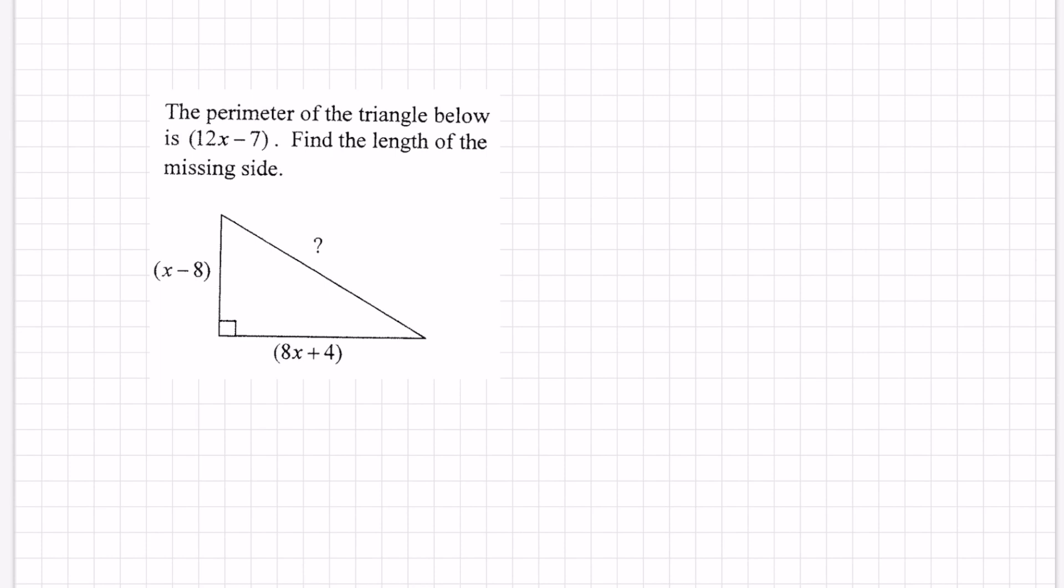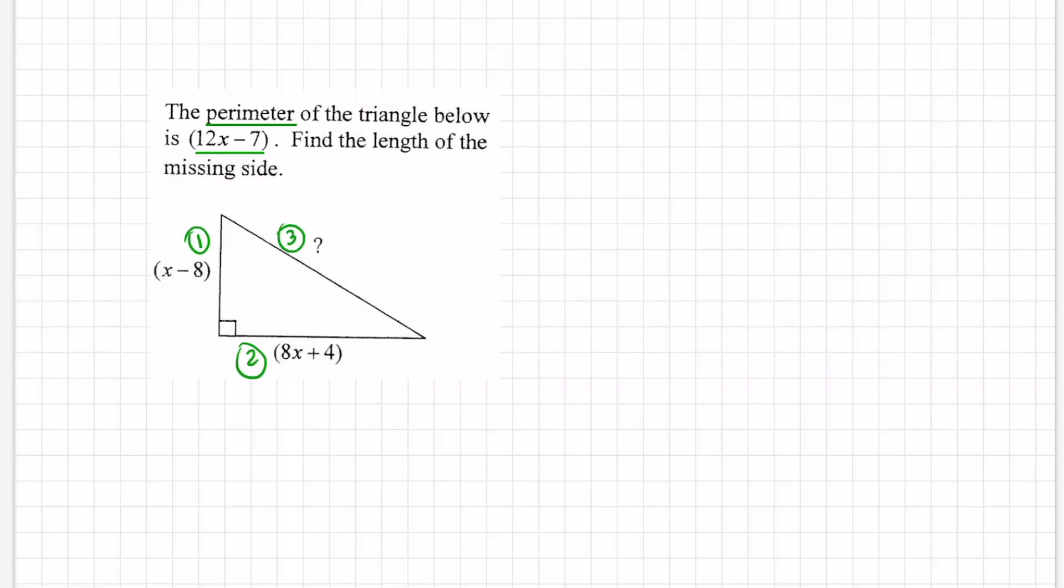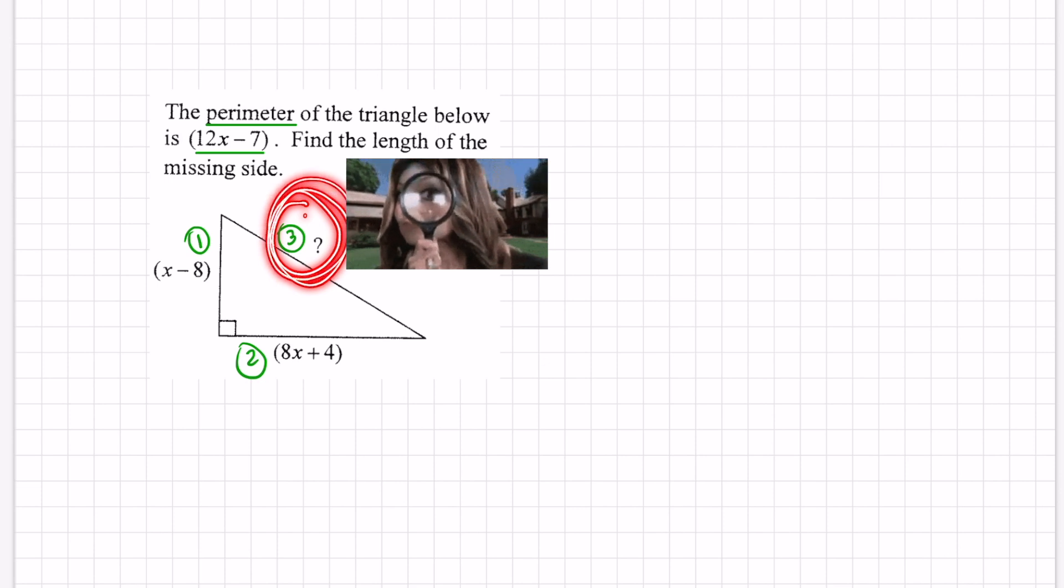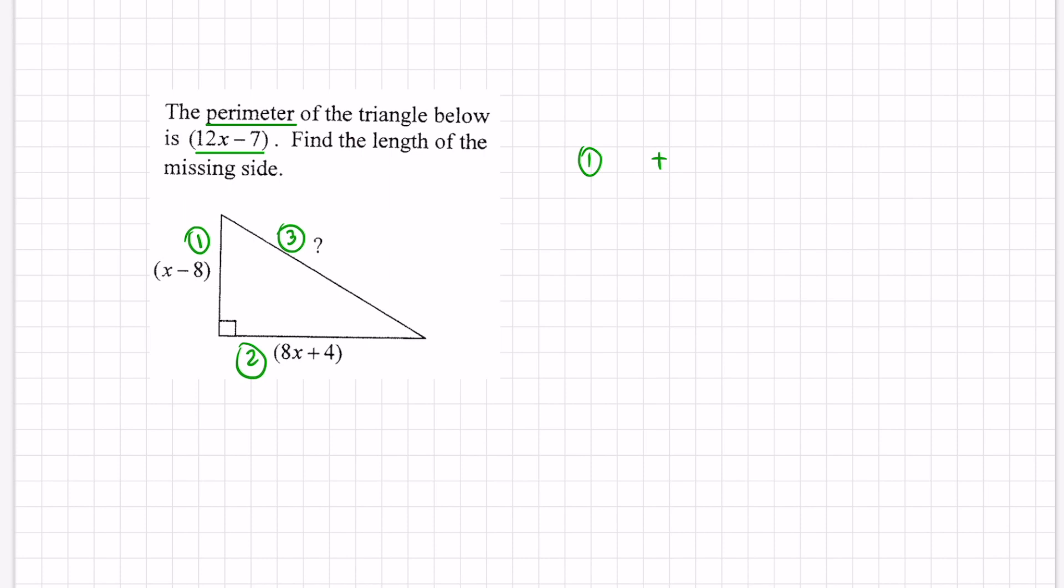To find the perimeter of a triangle we're just going to add up all the sides. Let me read the word problem. It says the perimeter of the triangle below, once again we are given a perimeter, we're given 12x - 7 as my perimeter. Find the length of the missing side. Our goal is to find that third one and we just have to add up the side lengths for one, two, and three which represents the three sides of the triangle and that's the perimeter for a triangle.